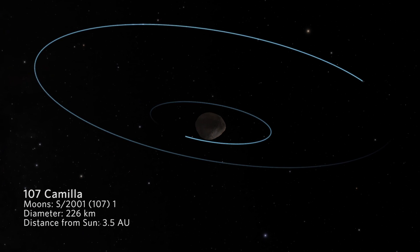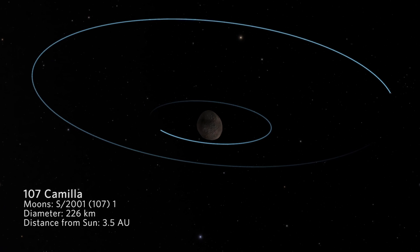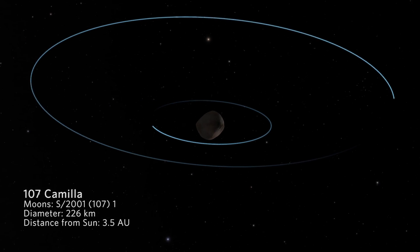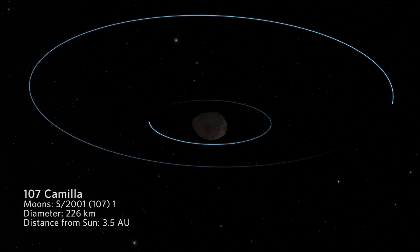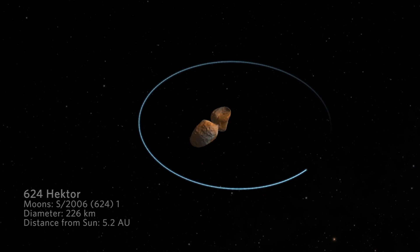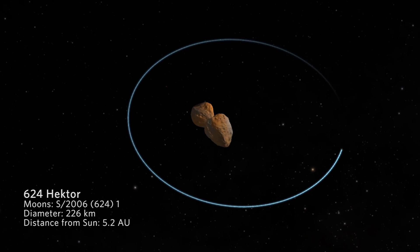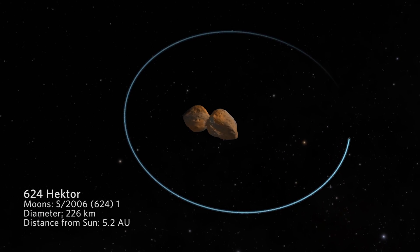But if the potato is not homogeneous inside — if it's made of a core of dense material, for instance — the moon will not see the potato shape anymore. It will only see the core. That's the way you can detect that asteroids are in fact differentiated.